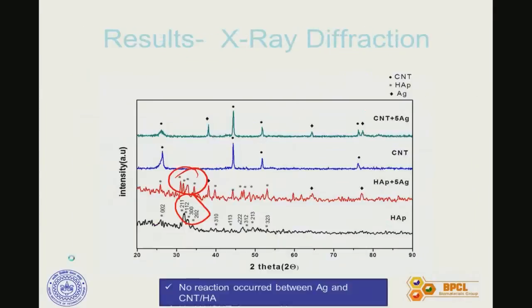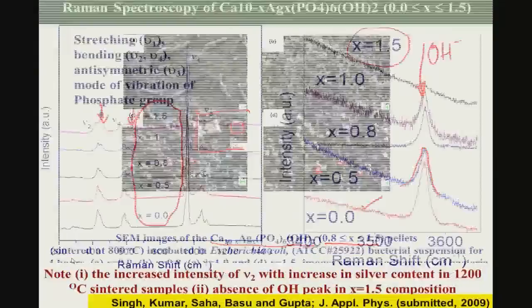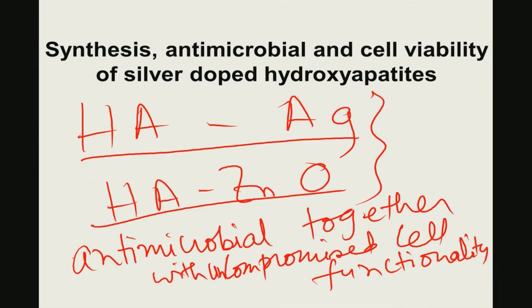In conclusion, I have completed the discussion on antimicrobial properties of hydroxyapatite-silver and hydroxyapatite-zinc oxide, showing how silver and zinc oxide can be effective to cause bactericidal properties in vitro without compromising cell functionality at specific compositions. These specific compositions can be further tested in in vivo or preclinical studies.